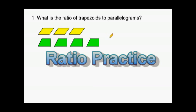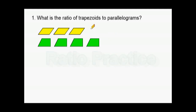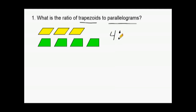This first problem is asking us to state the ratio of trapezoids to parallelograms. Because trapezoids is stated first, we have to count the number of trapezoids first, and we have four trapezoids. We compare that to the number of parallelograms, which is three. A ratio of four to three cannot be simplified, so this is our final answer.